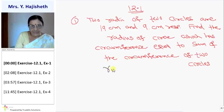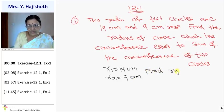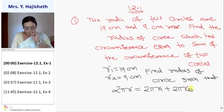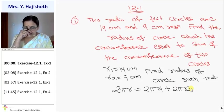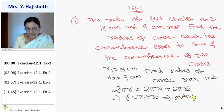You are given R1 is 19 centimeter and R2 is 9 centimeter. You are asked to find radius of circle such that perimeter of circle is equal to sum of perimeter of two circles. So, 2πR = 2πR1 + 2πR2. Two pi cancels, so R = R1 + R2. That implies radius is equal to 19 + 9 = 28 centimeter.